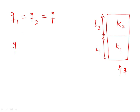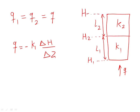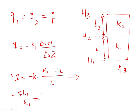So if we write Darcy's law for layer one, we can write Q is equal to minus K1 times the gradient of the pressure across layer one. Let's assume the pressure head at the inlet is H1, at the interface between layer one and layer two is H2, and at the outlet is H3. Therefore Q equals minus K1 times (H1 minus H2) divided by L1, which gives us H2 equals H1 plus Q times L1 divided by K1.